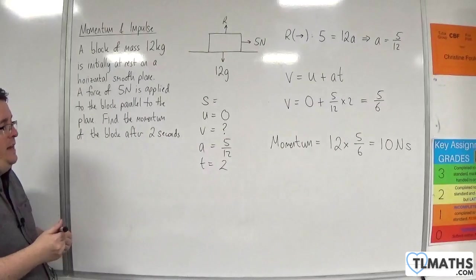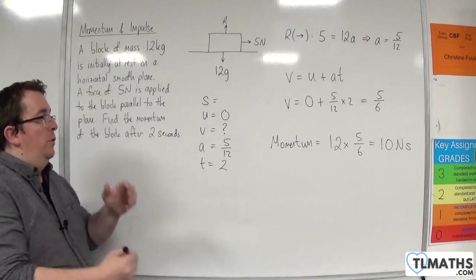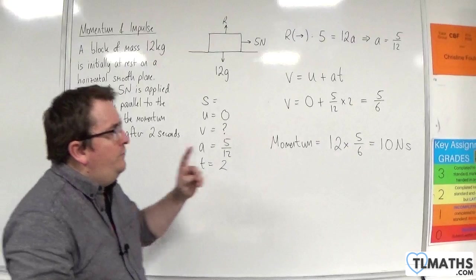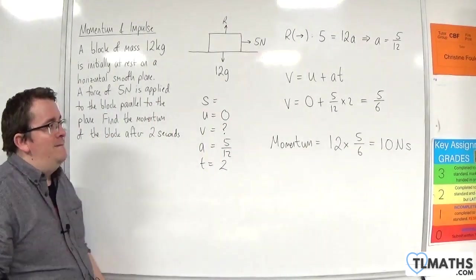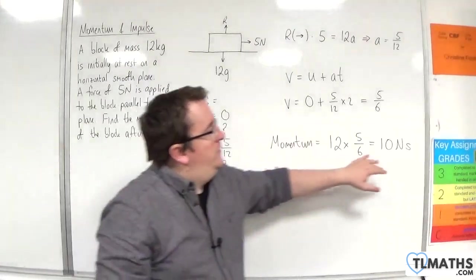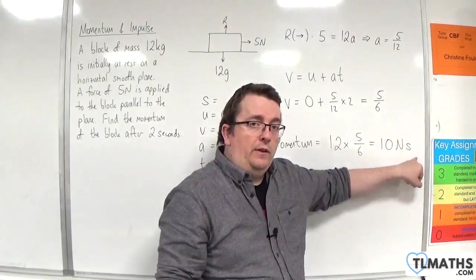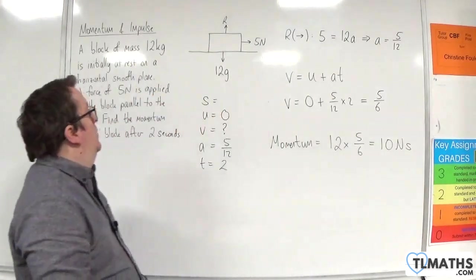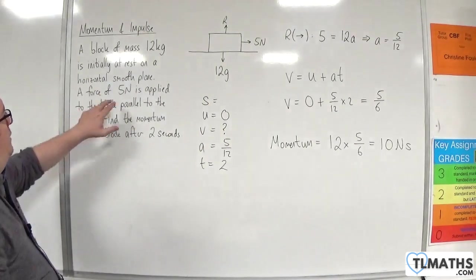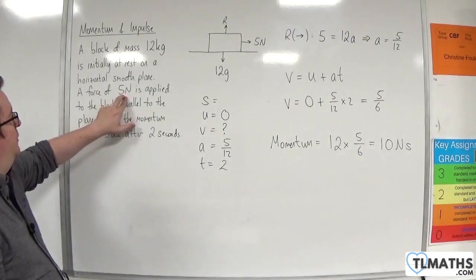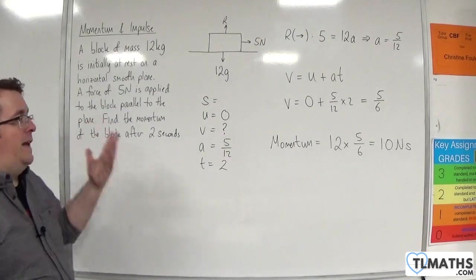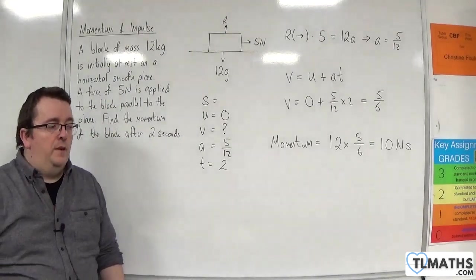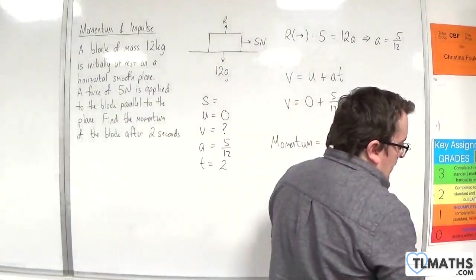Now, the eagle-eyed among you may have thought, well, I know that momentum is measured in newton seconds. So, newton times seconds is force times time. So, why can't I just multiply the force, 5 newtons, by the time 2 seconds? And then I get 10 newton seconds. Now, in this situation, it will work.